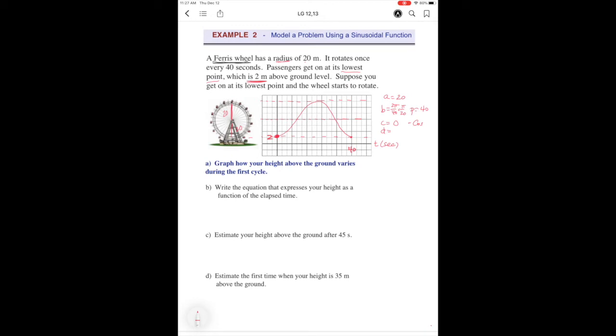Remember this is 2 right here where you get on, right there. But remember the radius is 20, so this is 22. So that's your midline, 22, and this would be 42.